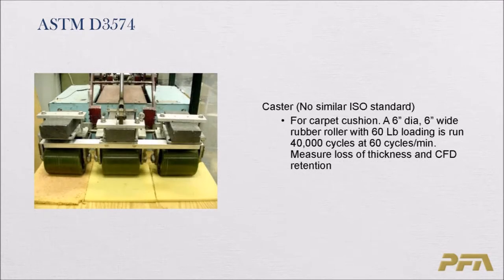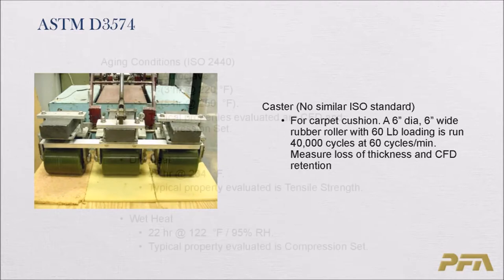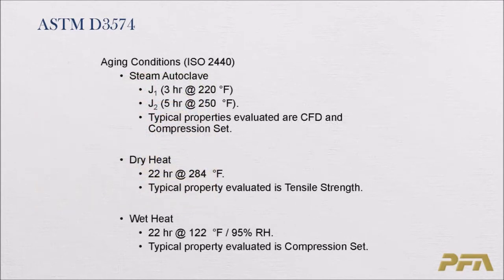The last fatigue test is caster, used for carpet cushion. A six-inch diameter, six-inch wide roller with a 60-pound loading goes through 40,000 cycles at 60 cycles per minute; you measure loss of thickness and CFD retention. The standard also specifies aging conditions: steam autoclave with either J1 (3 hours at 220°F) or J2 (5 hours at 250°F); the typical properties evaluated are CFD and compression set.